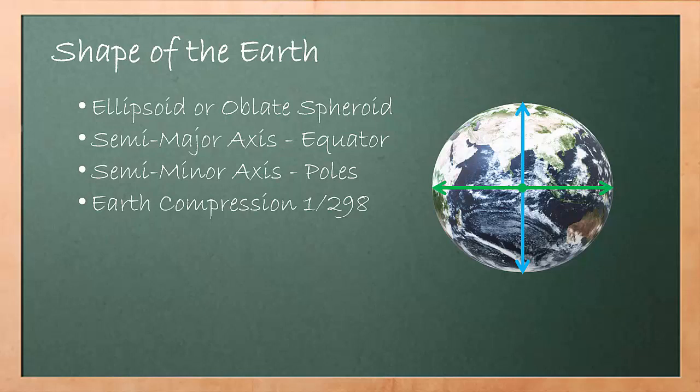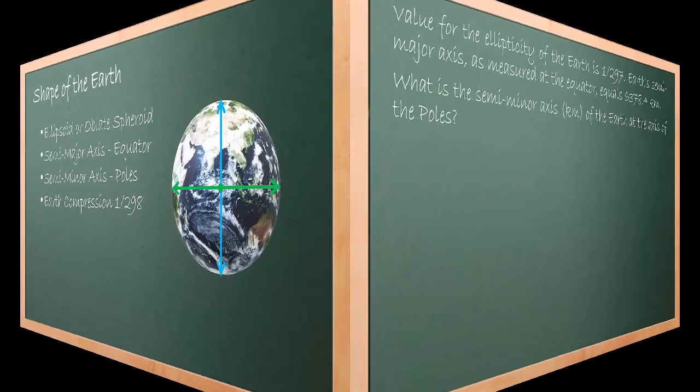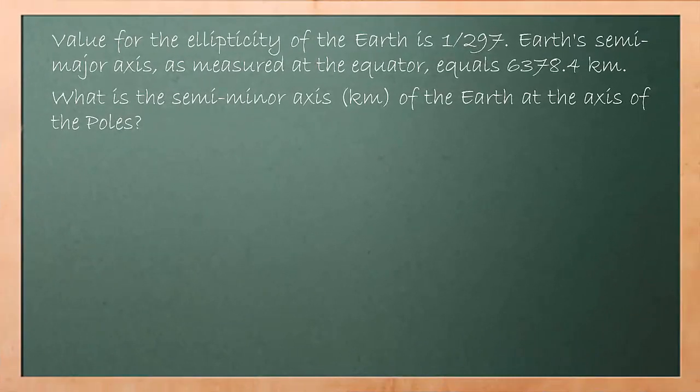To use the earth compression value, let's look at the sample question taken from Aviation Exam database question number 40526. Value for the ellipticity of the earth is 1 over 297. Earth's semi-major axis at the equator equals 6,378.4 kilometers. What is the semi-minor axis in kilometers of the earth at the axis of the poles?